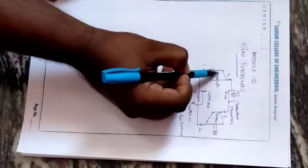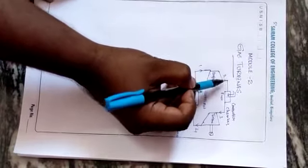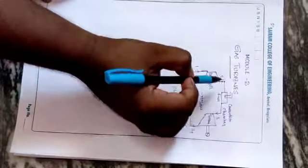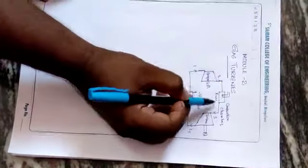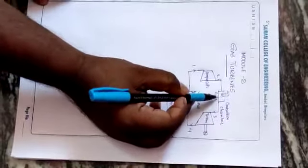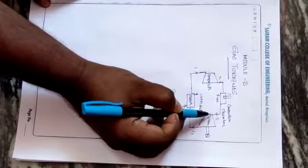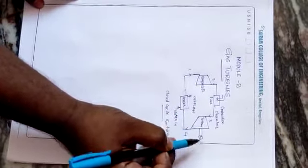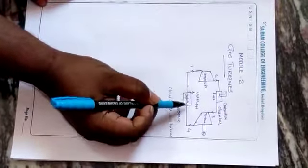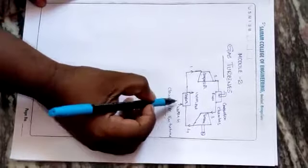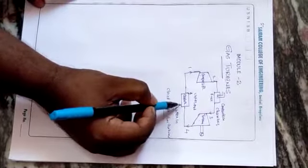First, air enters into the compressor and the compressed air is directed to the combustion chamber where fuel is supplied. Combustion takes place and that gas enters into the turbine. Expansion takes place and work is developed. The remaining gas comes out to the cooler, where the gas is cooled with the help of water — water goes in and water comes out, so cooling takes place.